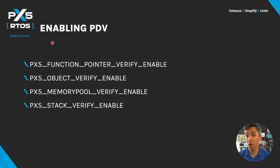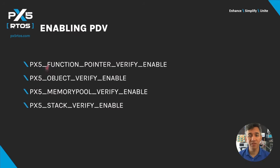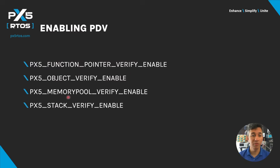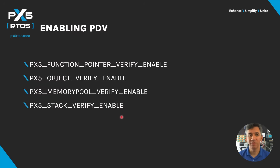The use of PDV is optional and not enabled by default. To enable it, build PX5 RTA source with specific defines. There are four possibilities: function pointer verify enable, object verify enable, memory pool verify enable, and stack verify enable.